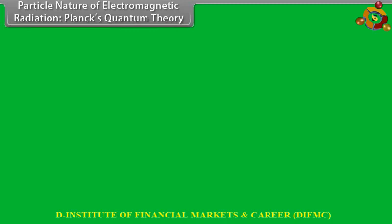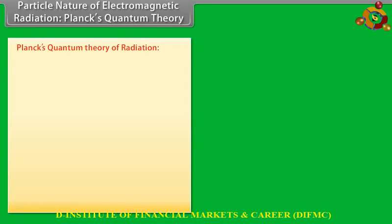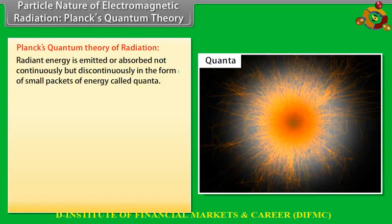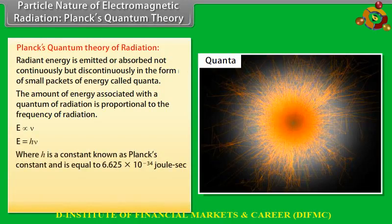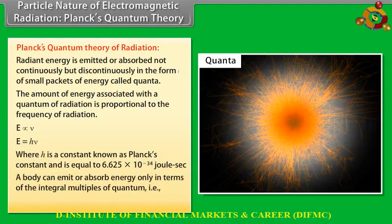Planck's quantum theory of radiation: Radiant energy is emitted or absorbed not continuously but discontinuously in small packets called quanta. The energy associated with a quantum is proportional to the frequency: E = hν, where h is Planck's constant equal to 6.625 × 10⁻³⁴ joule·second. A body can emit or absorb energy only in integral multiples of a quantum: E = Nhν, where N = 1, 2, 3, 4, etc.